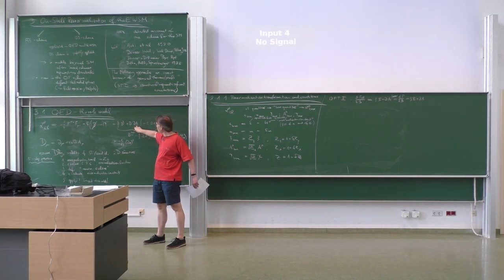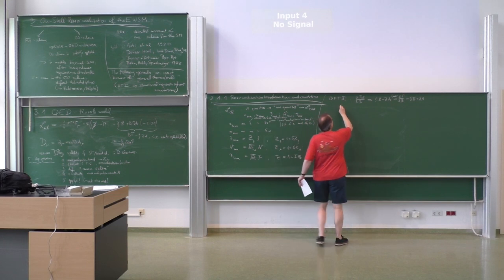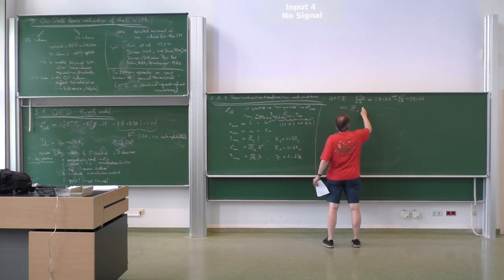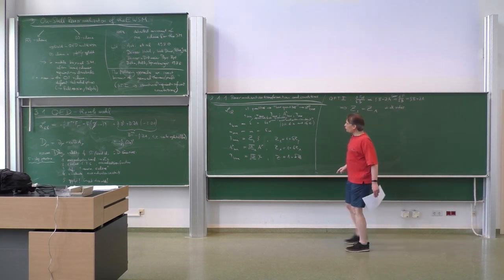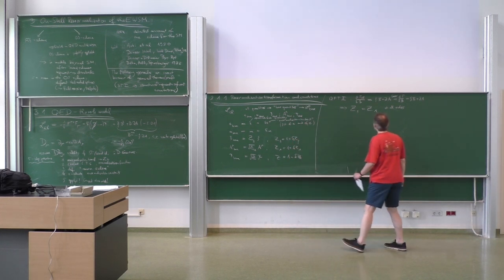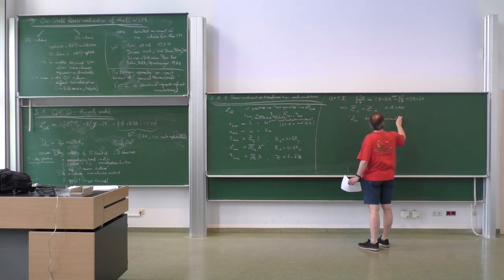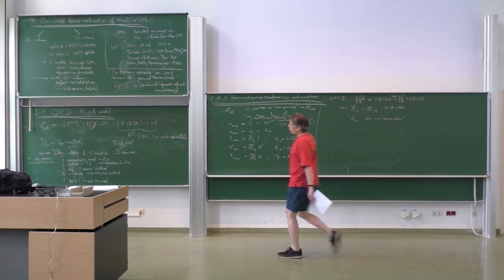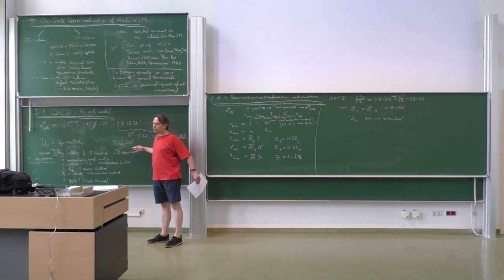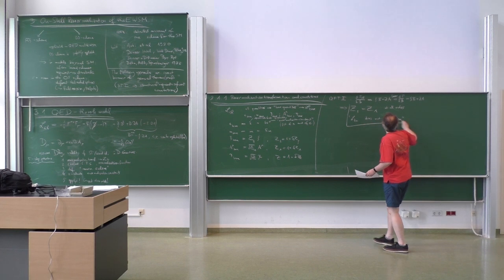Therefore the renormalization of xi must be Z_A at all orders. This gives us already one simplification: the gauge parameter does not have an independent renormalization transformation. The simple statement is that the gauge fixing term L_fix does not renormalize. This means that after applying the renormalization transformation, the gauge fixing term will never receive Z factors or renormalization constants. That is a simplification to our renormalization prescription.